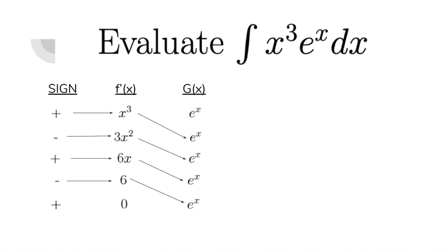So from here, the answer is simply positive x cubed times e to the power of x minus 3x squared times e to the power of x plus 6x times e to the power of x minus 6 times e to the power of x plus C. So that's pretty much how the tabular method works.